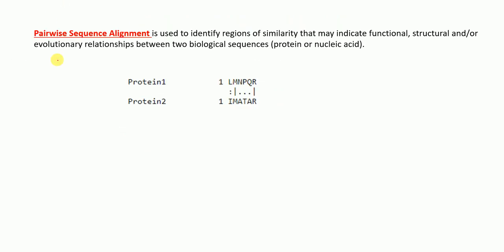Moving to pairwise sequence alignment — the word 'pair' means that we are aligning only two sequences. Pairwise sequence alignment is used to identify the regions of similarity or identity that may indicate functional, structural, or evolutionary relationships between two biological sequences. These sequences can be a protein or amino acid sequence, or a nucleic acid sequence.